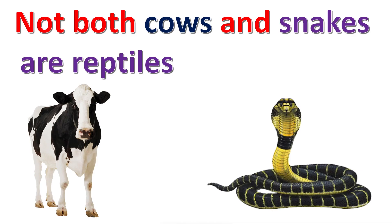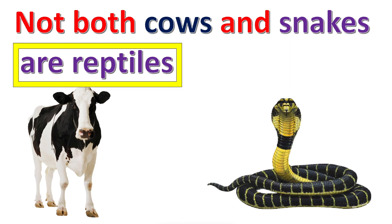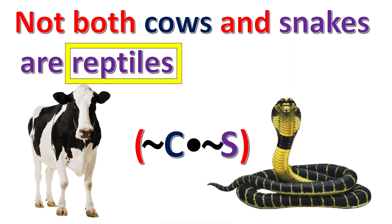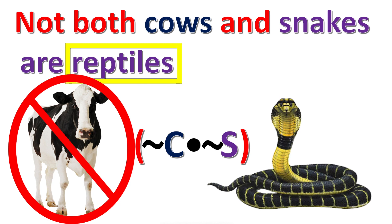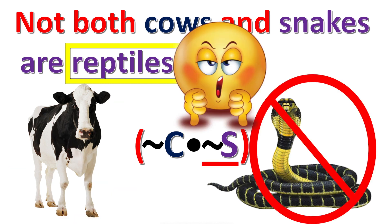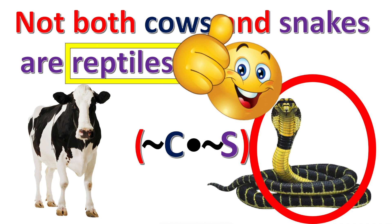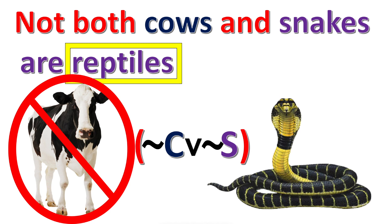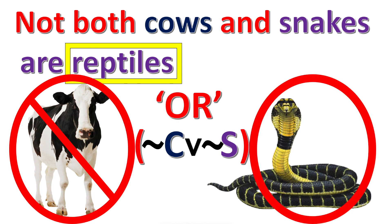The original statement — 'not both cows and snakes are reptiles' — when translated this way, means cows are not reptiles and snakes are not reptiles, which is false, because snakes are definitely reptiles. But if you change the dot to a wedge, it means cows are not reptiles or snakes are not reptiles, which is true, because cows are not reptiles.